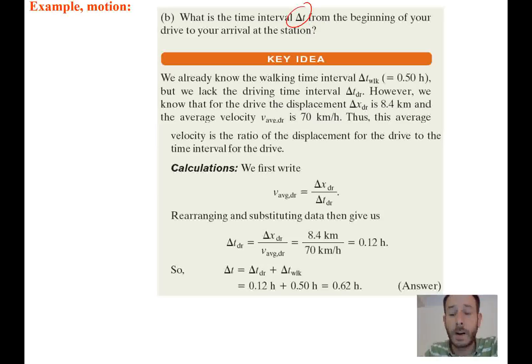All right, so we already know that the walking time interval delta t walk is 0.5 hours, right? We said it was 30 minutes, so we'll say our delta t, we'll just call this 2 since it's the second leg, is going to be 0.5 hours. Well, we don't know what delta t driving time is, so we don't really know what delta t1 is.